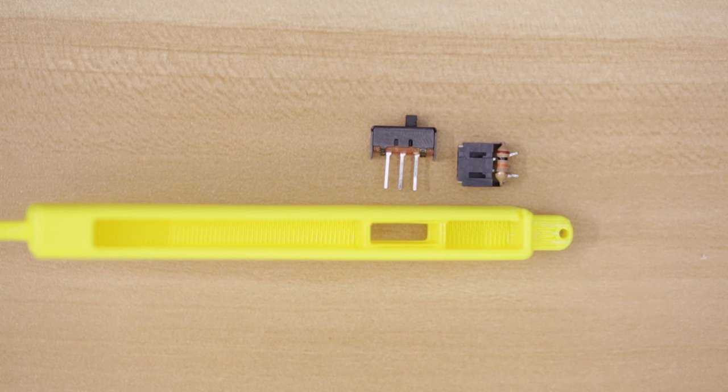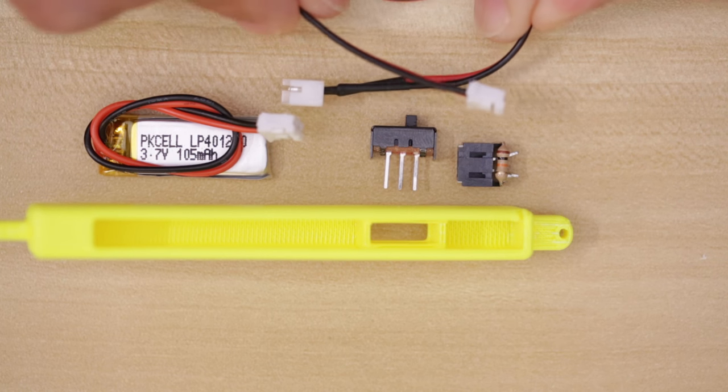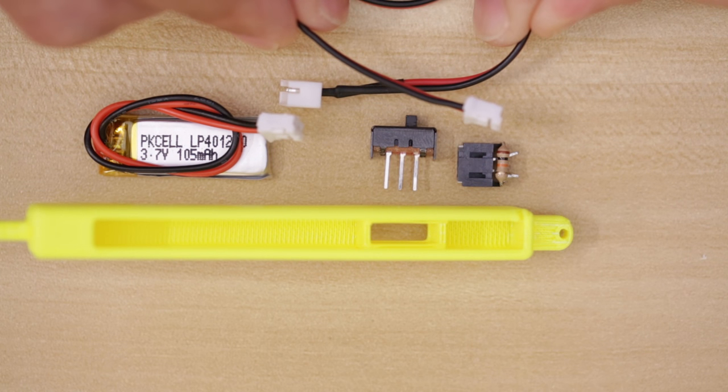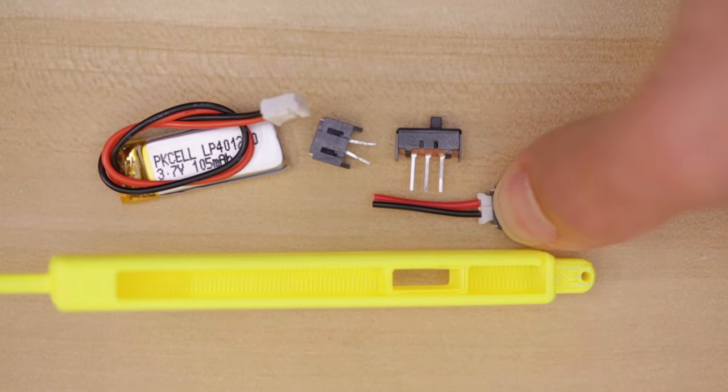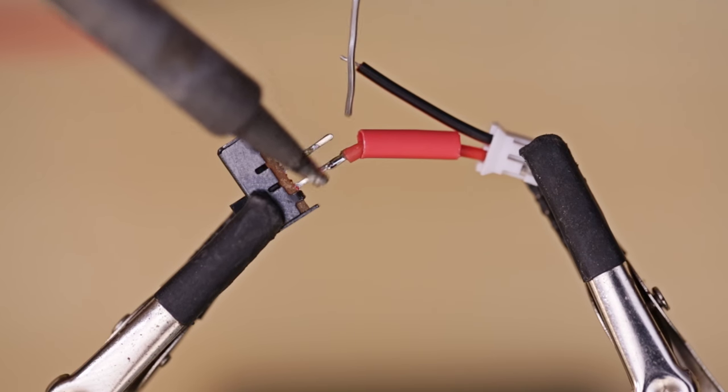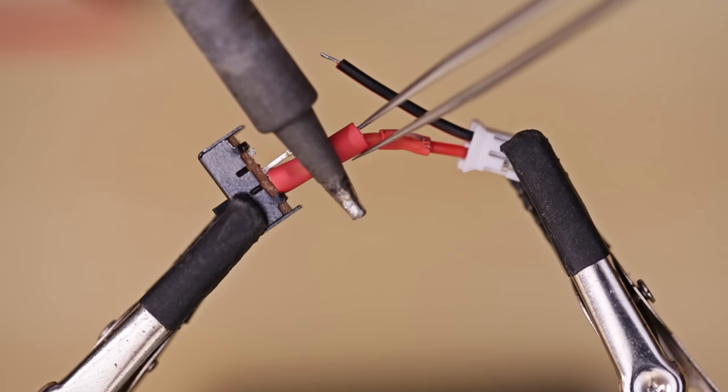Next we'll work on the slide switch and battery. We'll build a JST adapter so that we can easily disconnect the battery from the slide switch. Cut the wire short from the male JST connector, then connect the positive wire from the JST cable to one of the electrodes on the slide switch.